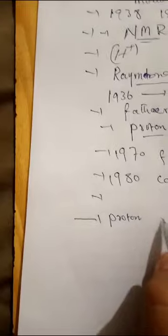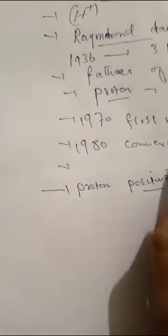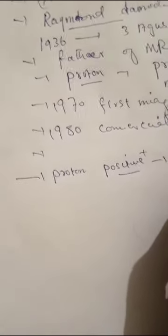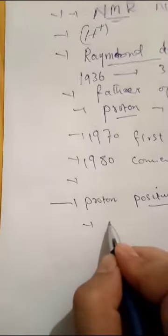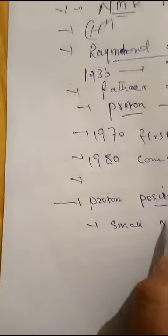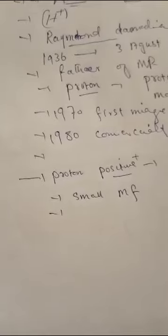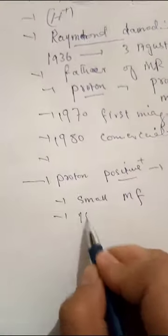The proton has a positive charge. This positive charge carries a current. Every current produces a small magnetic field around it. The positive charged proton produces a small magnetic field. For magnetic resonance, the body's scope is important.